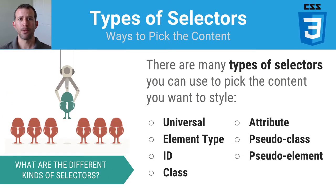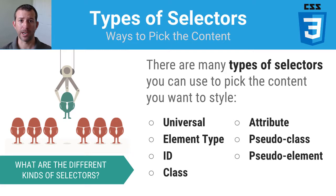I'm going to expose you to seven different types of selectors. I don't expect you to be able to memorize all of these — you will always have the ability as a developer, as a programmer, to refer to your documentation, the Mozilla Developer Network, this presentation, and so on. The seven types are: Universal, Element Type, ID, Class, Attribute, Pseudo Class, and Pseudo Element.